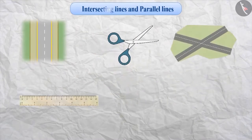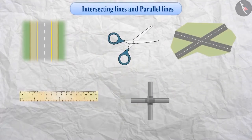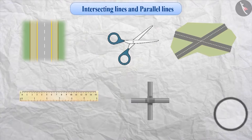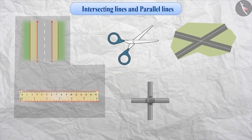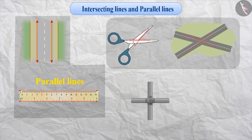On the basis of your understanding of intersecting and parallel lines, can you identify the intersecting lines and parallel lines in the given figures? Pause the video and try it. If we look at these figures, here lines do not intersect — therefore, these figures represent parallel lines. Whereas in these figures, the lines are intersecting — therefore, these figures represent intersecting lines.